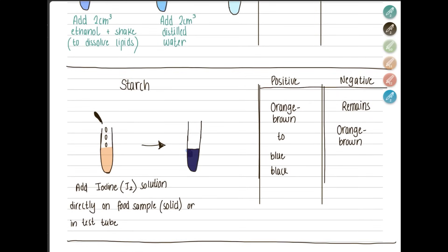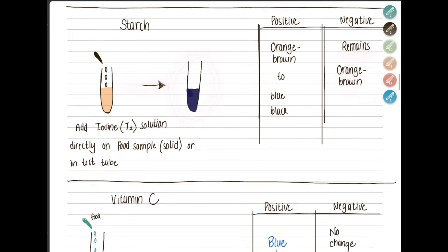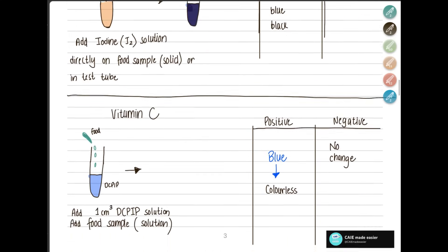For the starch test, add your sample — you can carry out the test directly on a solid or in a test tube if it's liquid. Add iodine solution and observe the color change. If negative, it remains orange-brown; if positive, it turns blue-black.